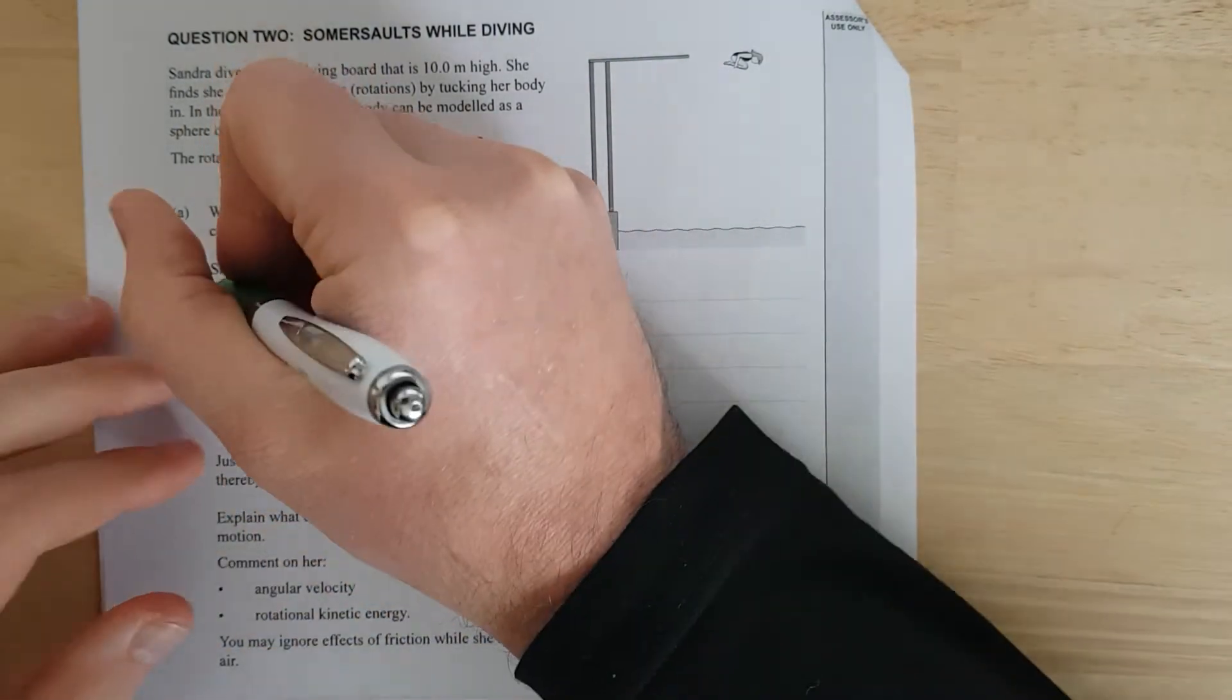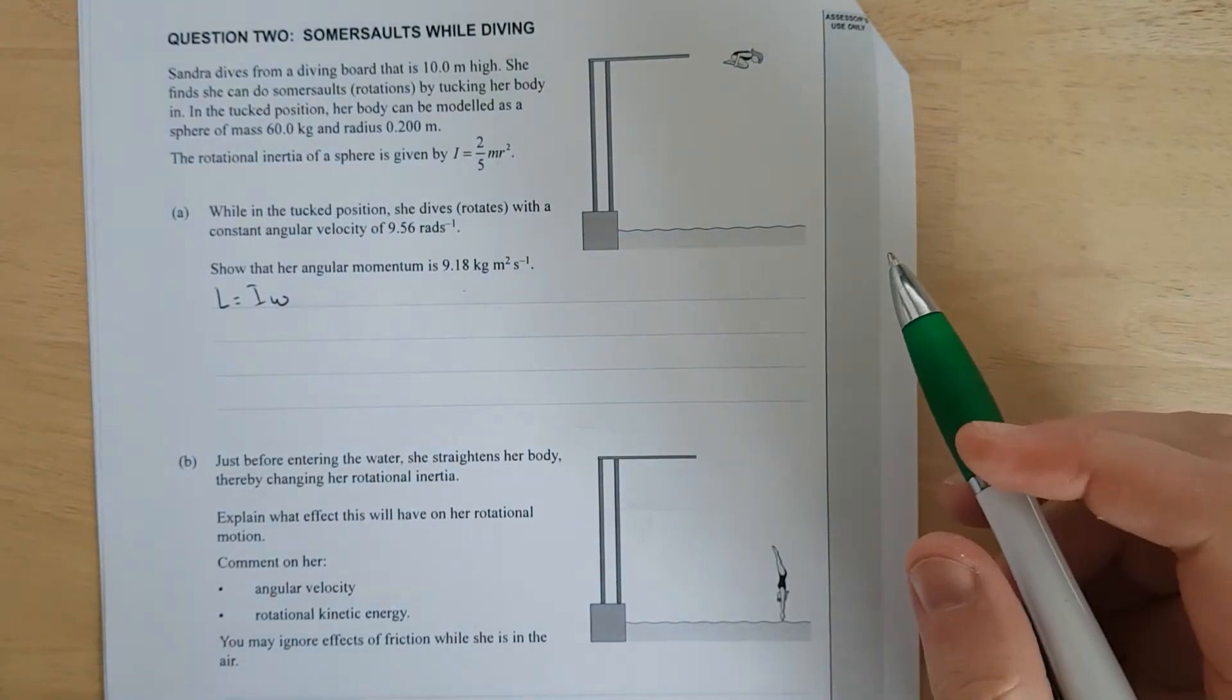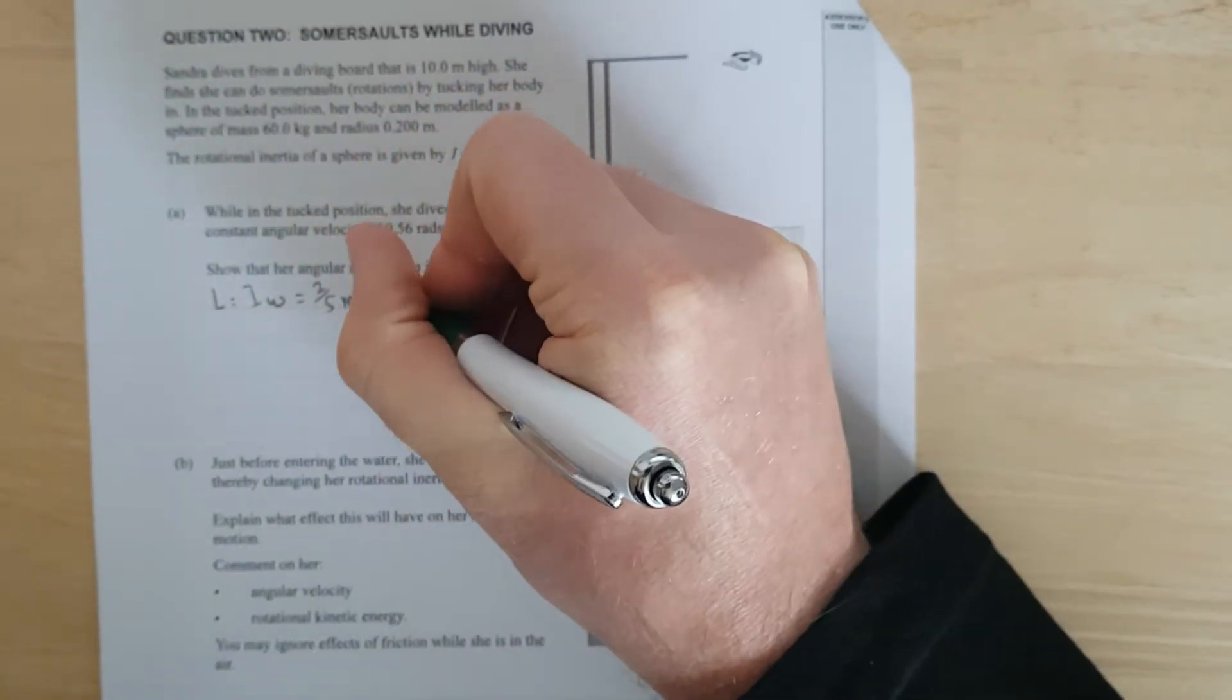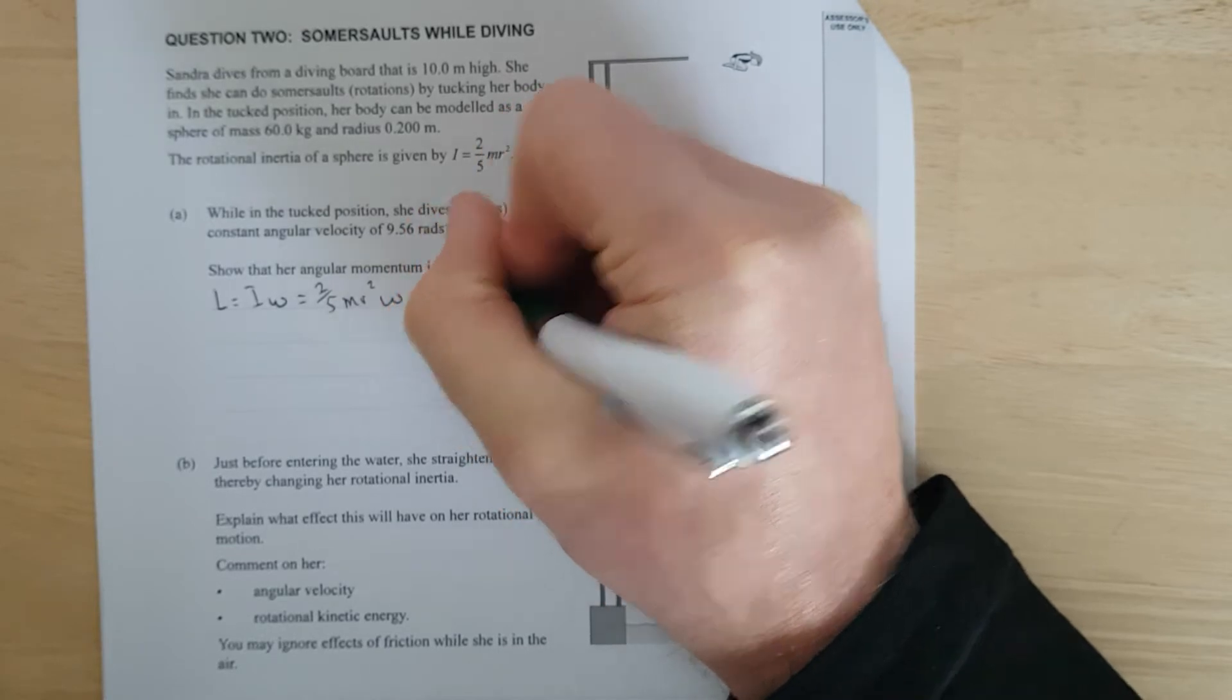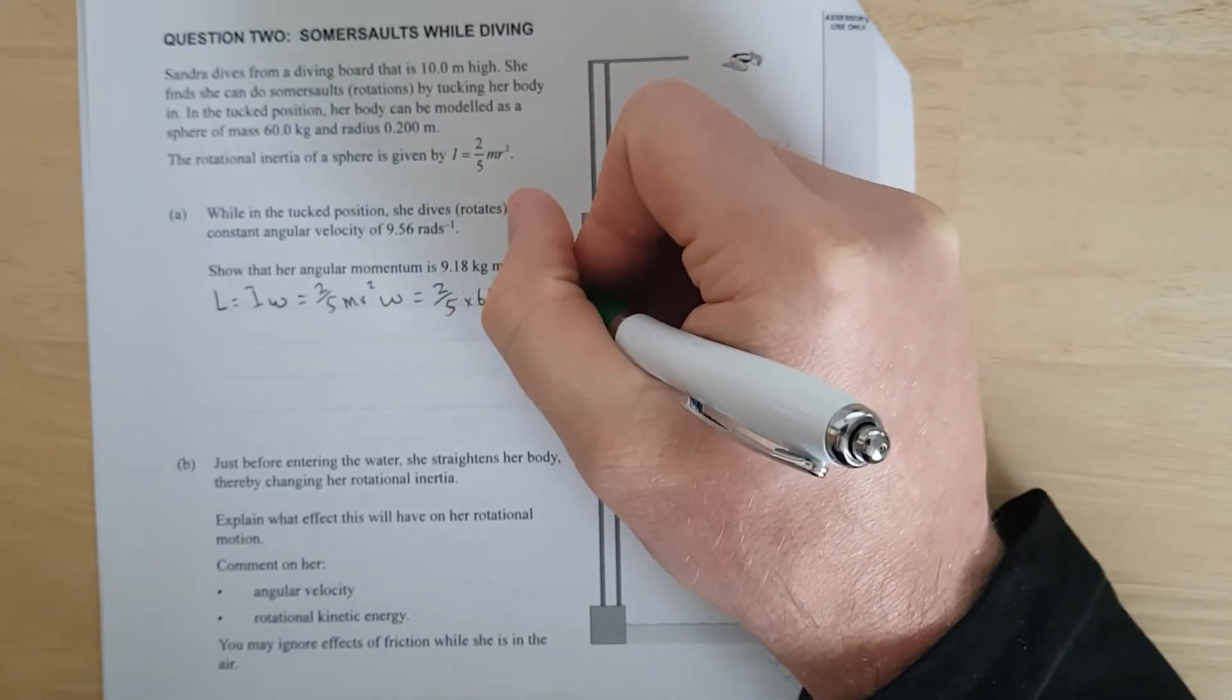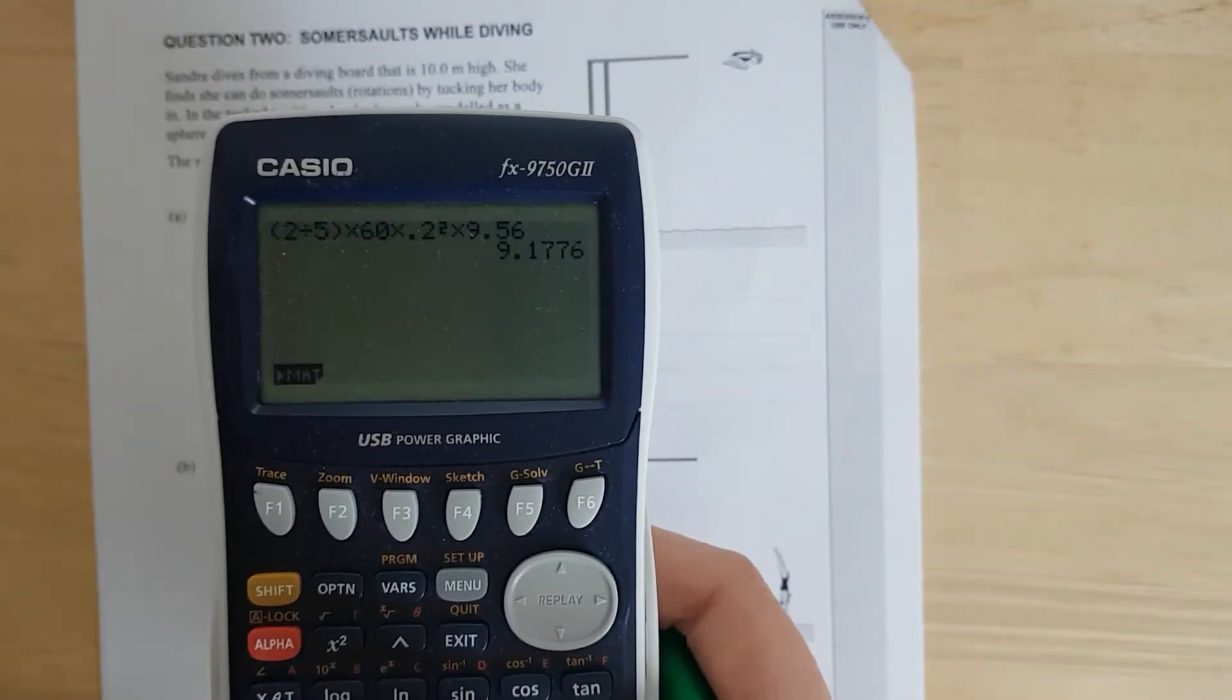Right, so that is just going to use the formula. L equals I omega. Have we got her rotational inertia? No, we totally don't. So that is going to be equal to 2/5 MR squared omega. This is a show question, so you've got to put the formula and then you've got to put the working. Which is going to be 2/5 times, what's her mass, 60 kilograms. That's quite a small person. Oh, that's not actually that small. Times, what's her radius, 0.2 squared times 9.56.